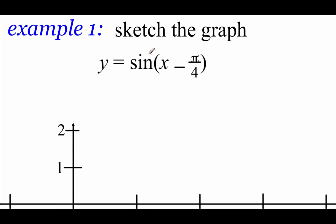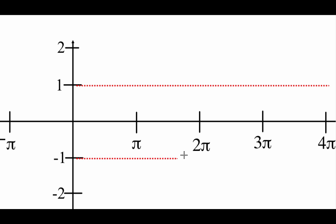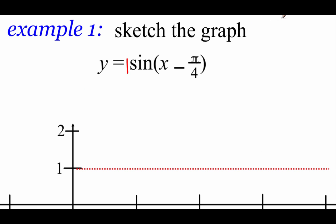In our first example, we've got y equals the sine of (x minus π/4). We're still going to do all that stuff with A and B from the last video — we're just adding in the phase shift. Looking at the A value first: A is the number in front of our sine, and there's no number written, which means there's an implied 1. So the amplitude is just 1. On my graph, at 1 and at negative 1, I'm going to draw in those horizontal dotted lines because that's where my graph will bounce up and down between.